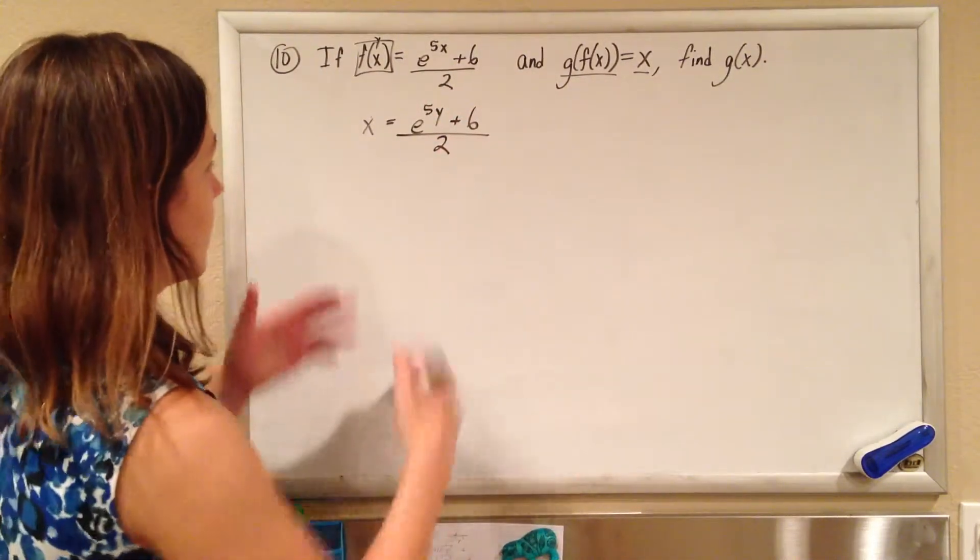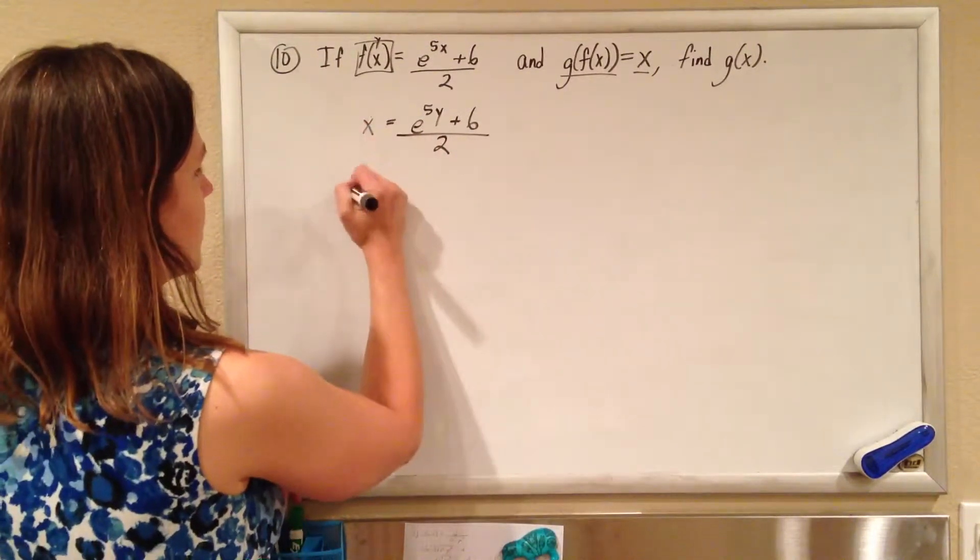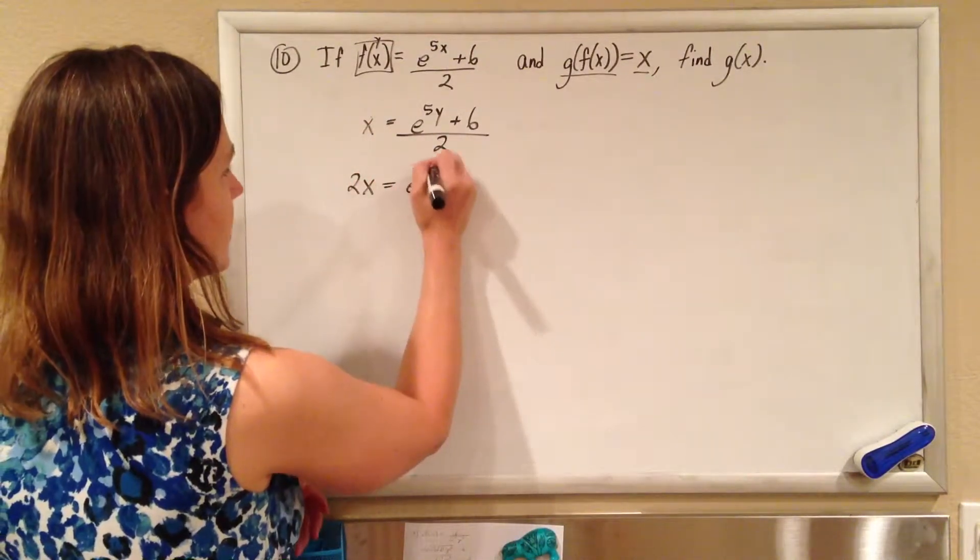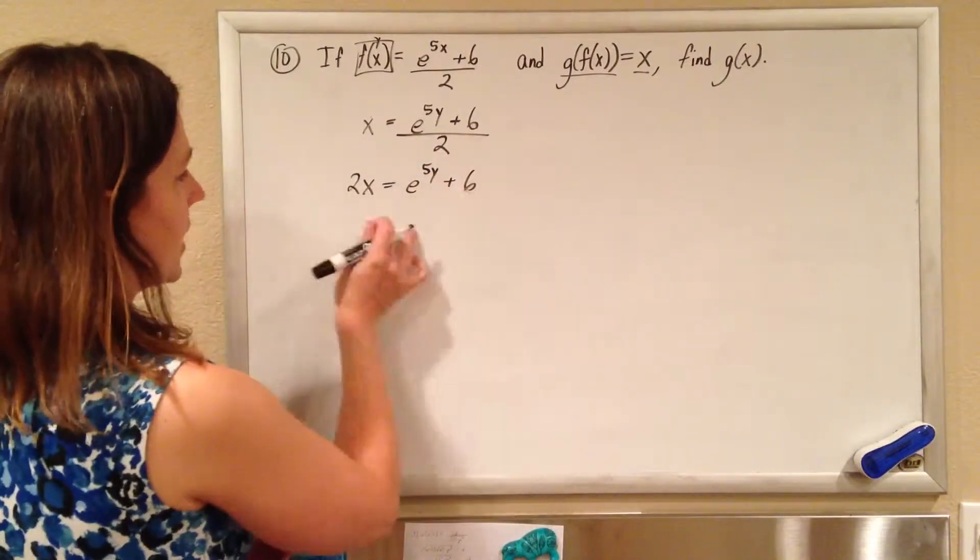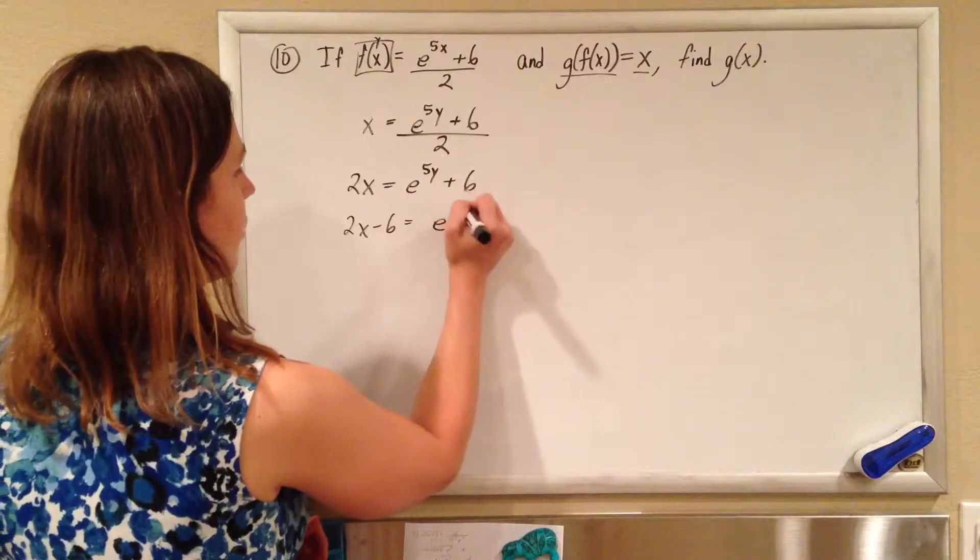This is a beautiful algebra I'm doing from here to solve for the y, so multiply both sides by 2, so you get 2x equals e to the 5y plus 6, subtract the 6, 2x minus 6 equals e to the 5y.